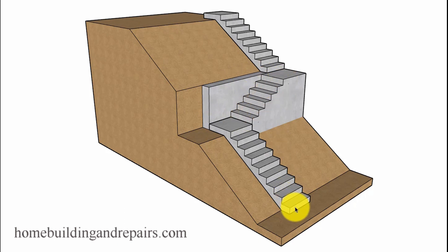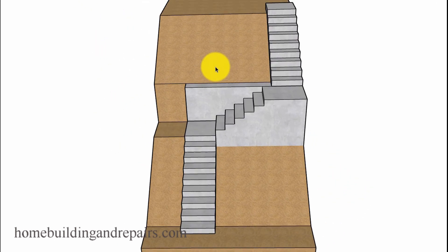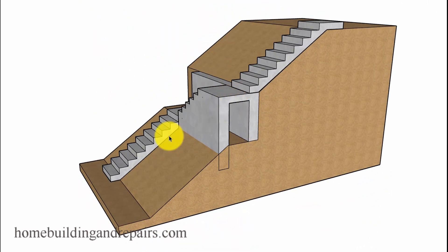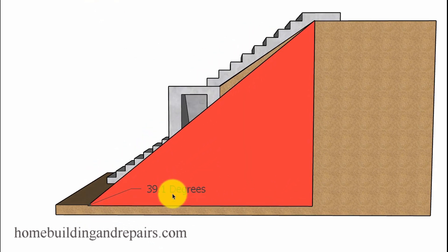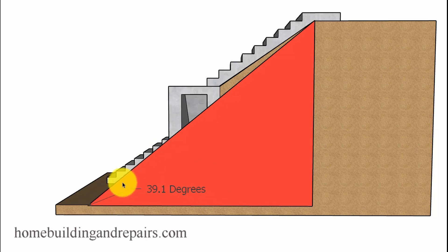So if we came up, change the direction, and then went back up again, this type of stairway allows us to put a stairway on a hillside with a 39.1 degree angle. You could build a stairway, it's just not going to be as safe as this particular stairway.